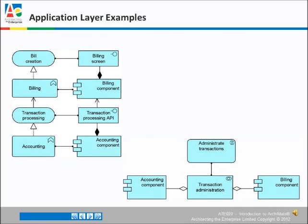In the example to the right, the accounting component and the billing component work together to form the transaction administration collaboration. The two circles linked together are the collaboration notation. And the diamonds with the lines attached are the collaboration relationship notation. This collaboration is assigned to the administrate transaction interaction.